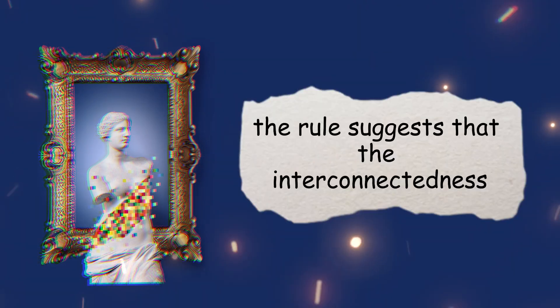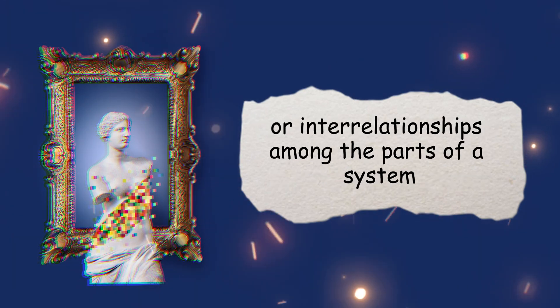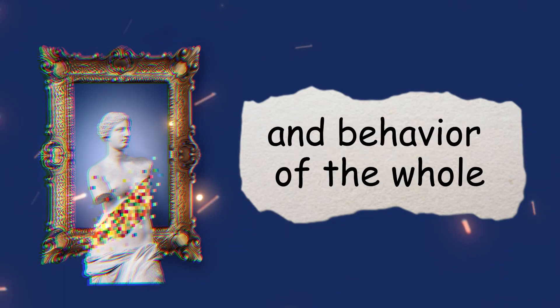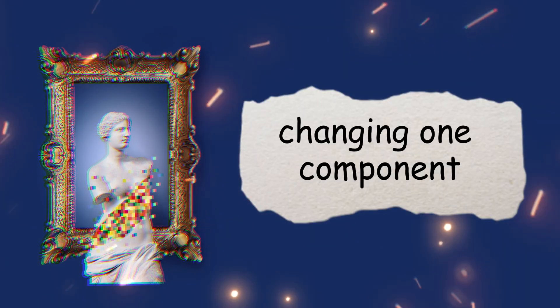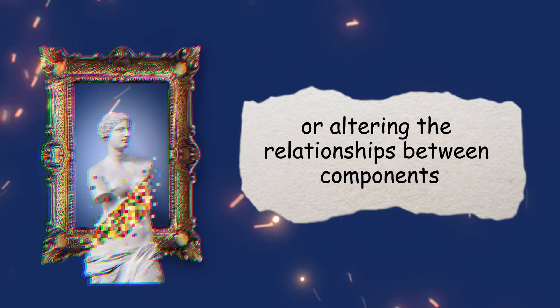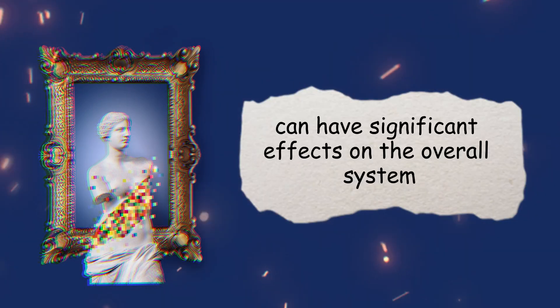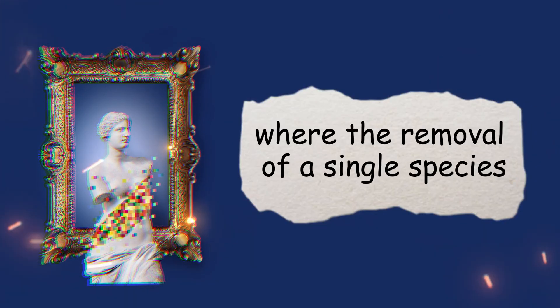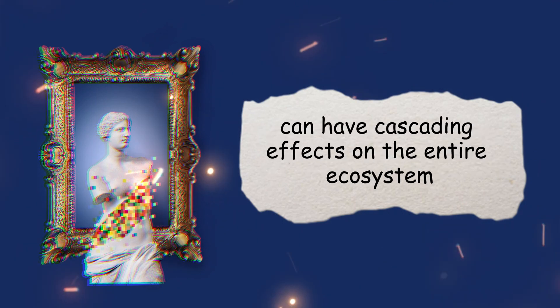Interconnectivity. The rule suggests that the interconnectedness or interrelationships among the parts of a system play a crucial role in determining the properties and behavior of the whole. Changing one component or altering the relationships between components can have significant effects on the overall system. This interconnectedness can be seen in ecological systems, where the removal of a single species can have cascading effects on the entire ecosystem.